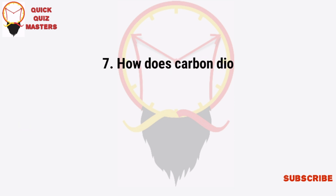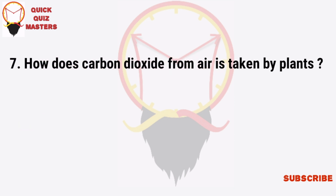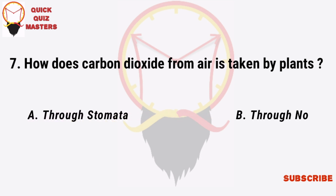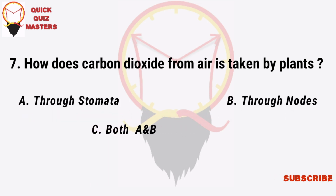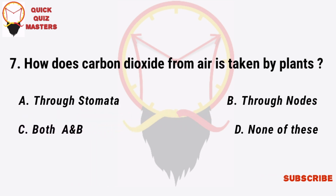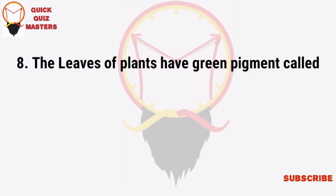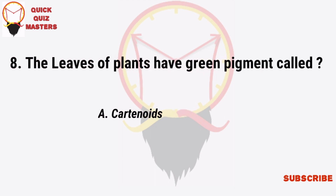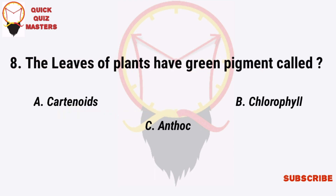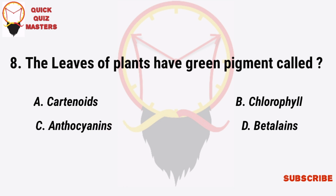How does carbon dioxide from air get taken in by plants? Through stomata, through nodes, both A and B, none of these. The leaves of plants have a green pigment called: carotenoid, chlorophyll, anthocyanin, beta carotene.